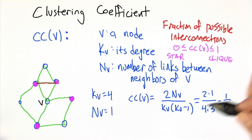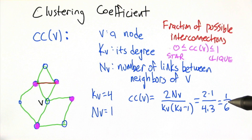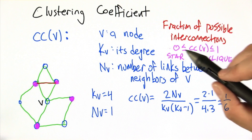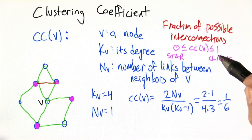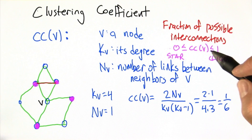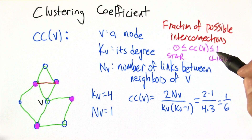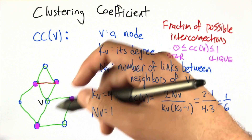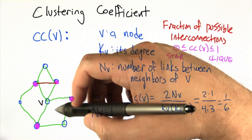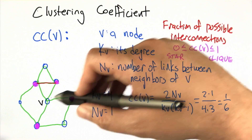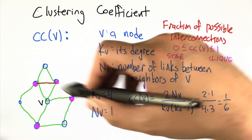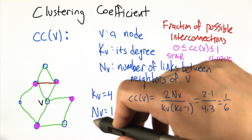So in this case, v is 1/6 — it's a sixth of the way from being a star to being a clique, so it's not that tightly connected. And that's sort of what we saw as well: v is connected to a bunch of neighbors, but they're not really connected to each other all that much.